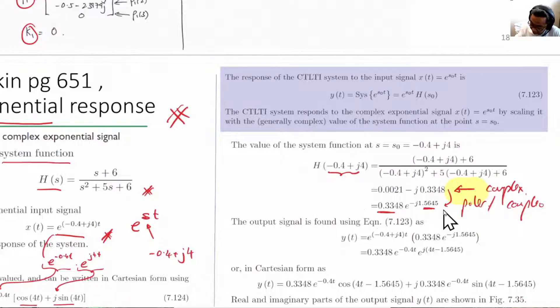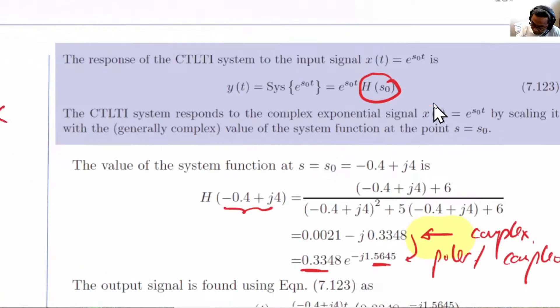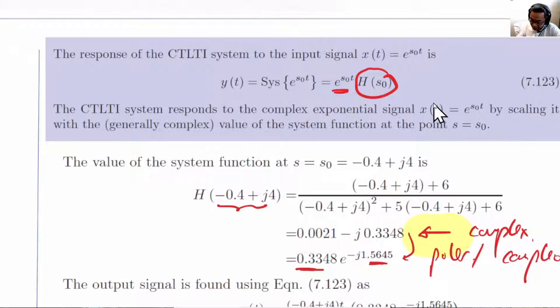This magnitude and the phase is exactly H(s₀) over here. And we can use that to multiply by the original signal, e^(s₀t).